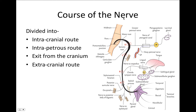Coming to the course of the nerve — please have a look at this diagram. The course is divided into four parts: the intracranial root (inside the cranium), the intrapetrous root (within the petrous part of the temporal bone), how it exits from the cranium, and then the extracranial root.